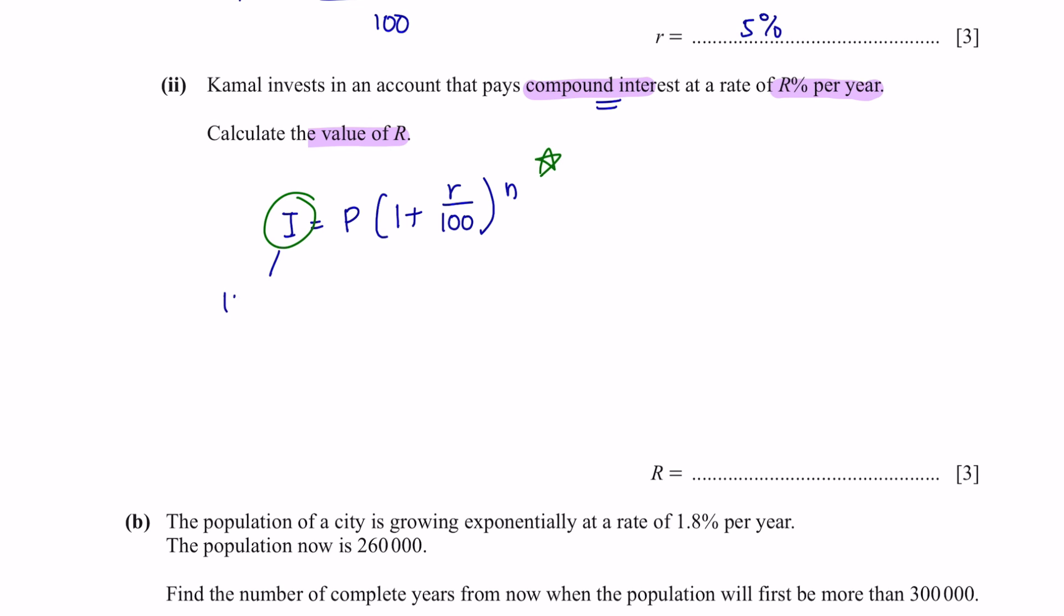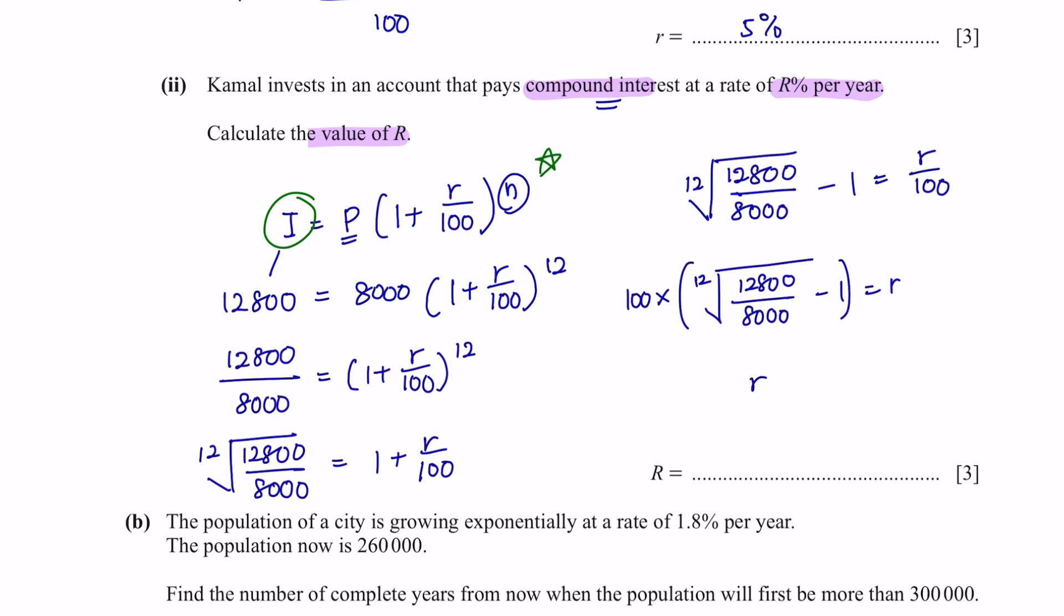So the I here would be $12,800. The principal was $8,000, and the number of years was 12. Rearranging this, we will get a value of R at 3.99%.